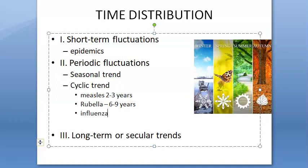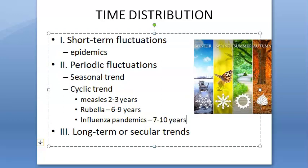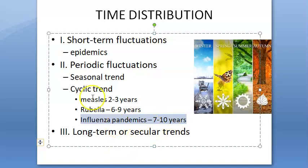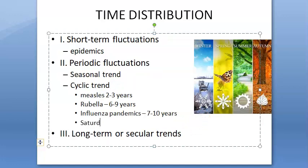Influenza pandemics also show a cyclic trend, occurring every 7 to 10 years, involving antigenic shift. Non-infectious diseases can also show cyclic trends — for example, automobile accidents are more frequent on weekends, especially Saturdays. So that is a cyclic trend — every Saturday, there are more accidents.